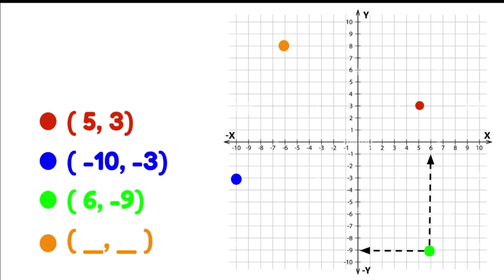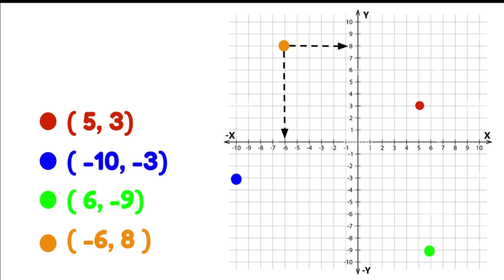Remembering our x-axis always goes first. Let's look at our orange dot: along the x-axis it's sitting at negative 6, and on the y-axis it's sitting at 8. So our ordered pair would be negative 6 and 8. That's how to figure out how to write ordered pairs when we already have the locations marked on the Cartesian plane.